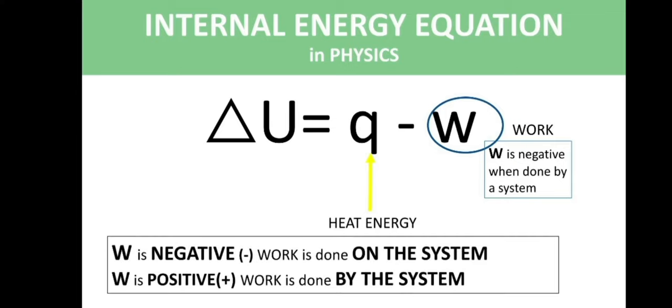Work is negative when work is done on the system, and work is positive when work is done by the system. You have to remember this. When work is done by the system, the system loses energy but the surroundings gain energy, and that is when work is positive.